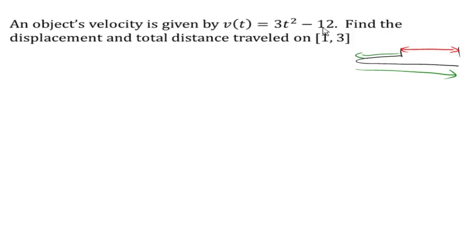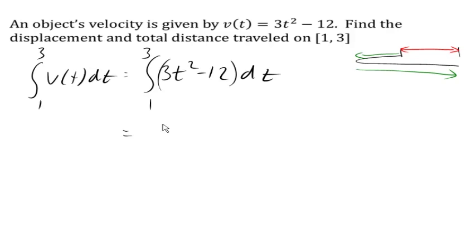Let's start with displacement. For displacement, we simply need to integrate our velocity function over our interval. We integrate from 1 to 3 of 3t² - 12 dt. The general antiderivative is t³ - 12t.